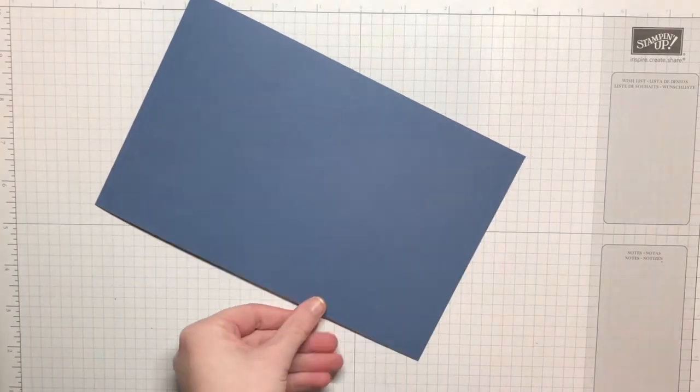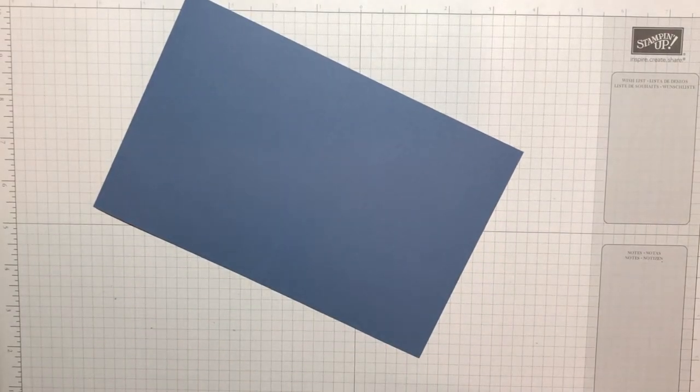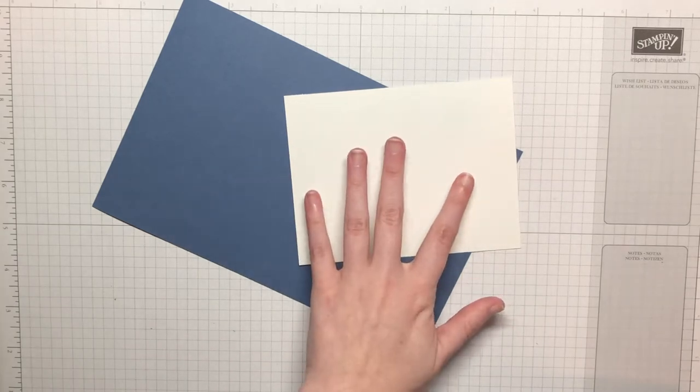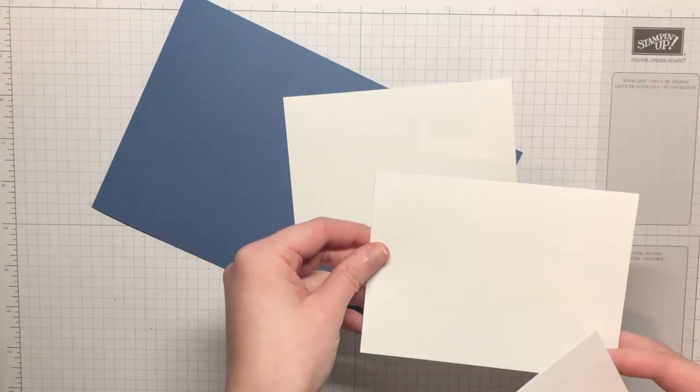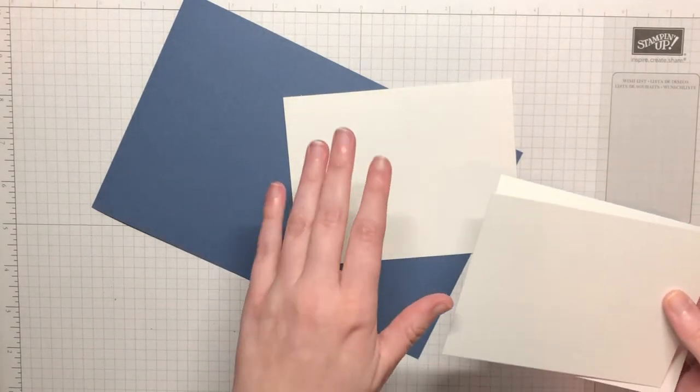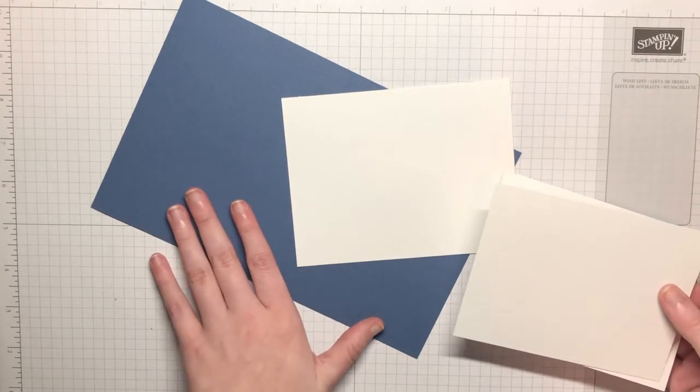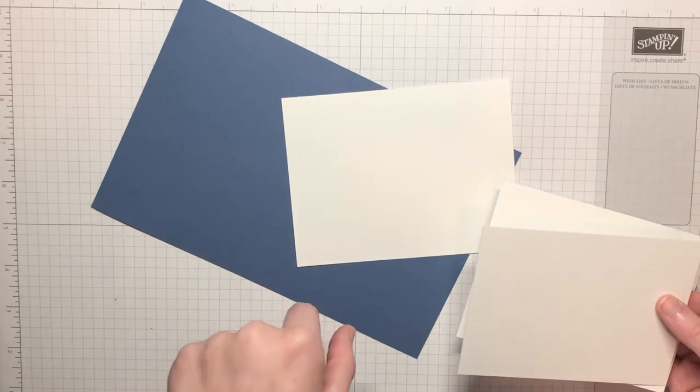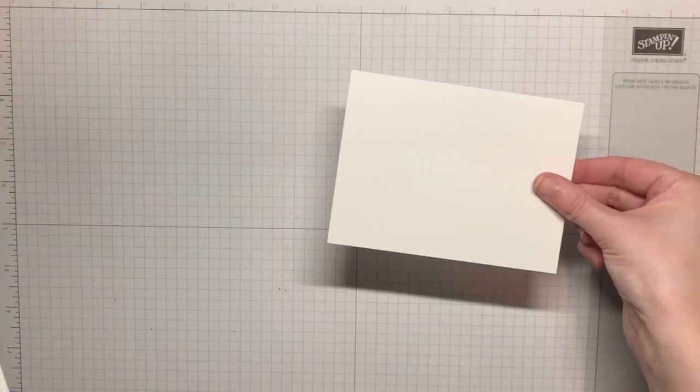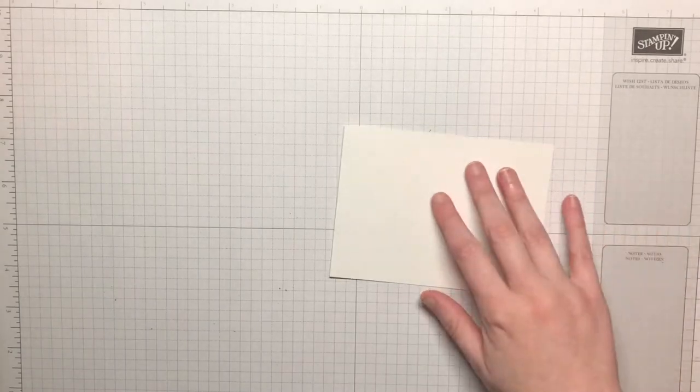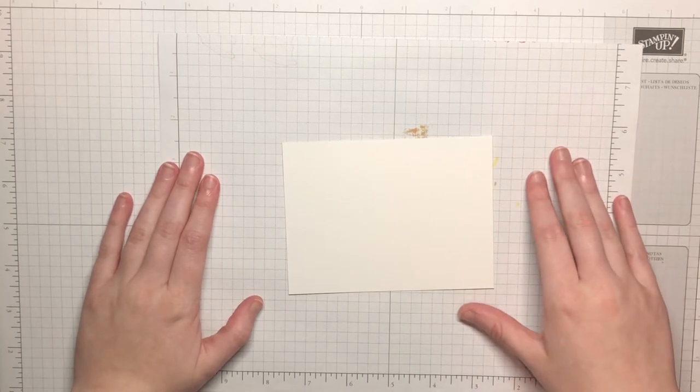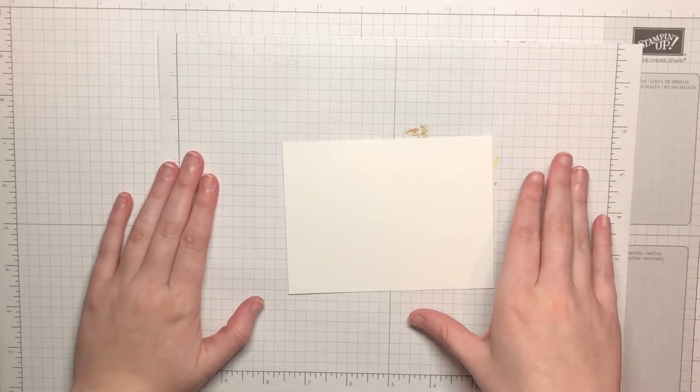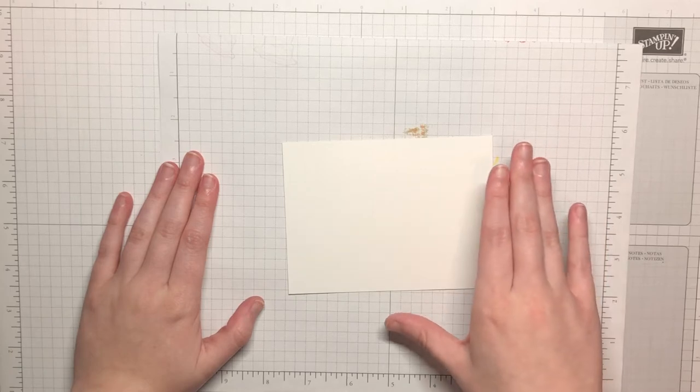For this card I've got a card base of Misty Moonlight and then I've got three pieces of Whisper White: one for the inside of the card, one for the framing, and one to actually do the sponging on. All of the measurements for these will be on my blog. I'm going to bring in a piece of scrap paper here because we will be sponging and it does get kind of messy.